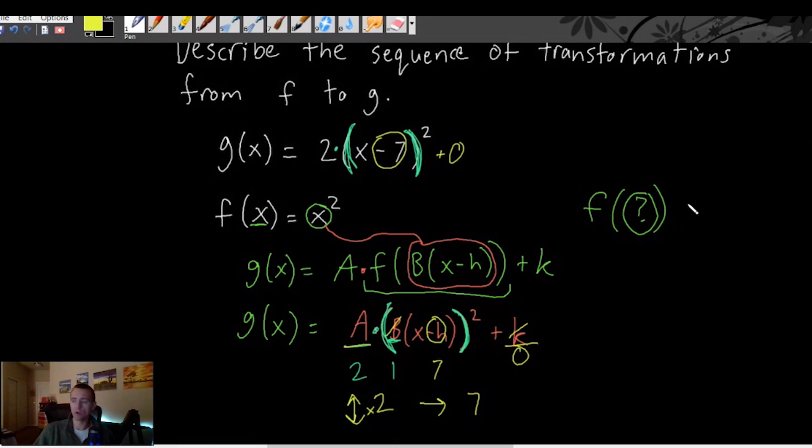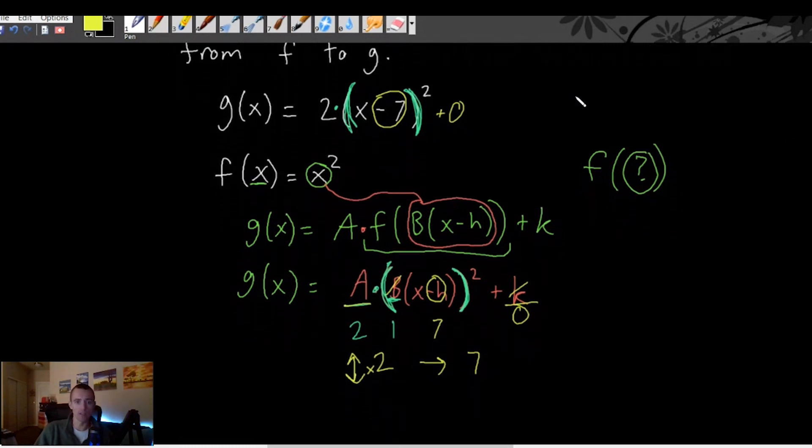So those are essentially the transformations that this is telling us to do to the parent function of x². We're stretching vertically by a factor of 2 and then we're shifting to the right 7 units.